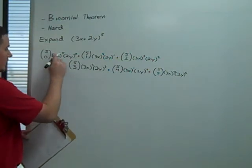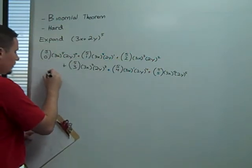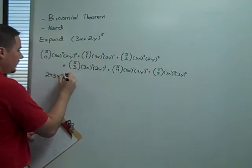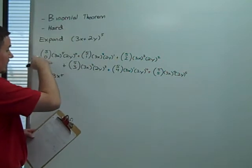So, this first term is going to be 3 to the fifth, which is 243 x to the fifth. We don't get any contribution from the coefficient or from y.